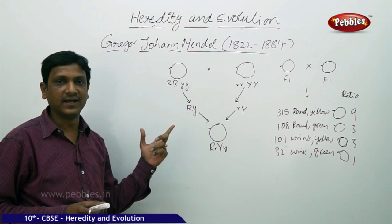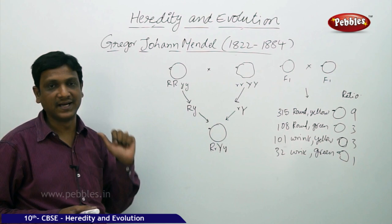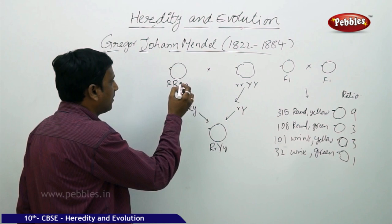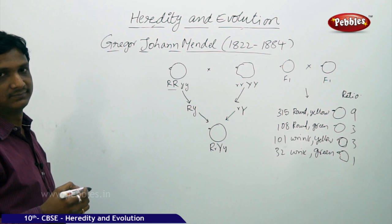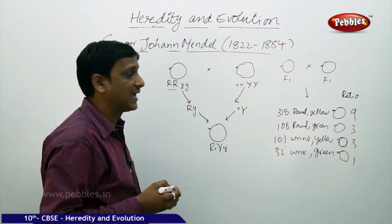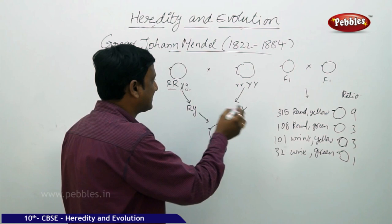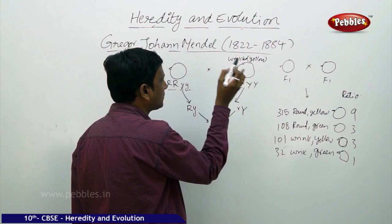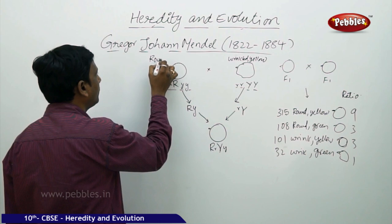Earlier we saw only one contrasting character — either short or tall. Now we are considering the color and shape of seeds of the pea plant. Initially, seeds that are round are taken — their roundness is determined by both genes capital R, capital R, and green color is determined by small y, small y. On the other side, a seed which is wrinkled and yellow is taken. Wrinkledness is shown by small r, small r, and yellow by capital Y, capital Y. The first one is round green.